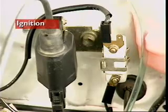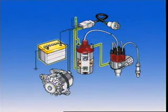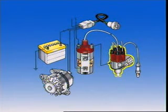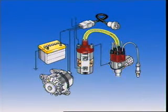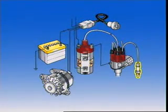This section examines ignition. A basic ignition system consists of the battery, low tension cables, the ignition coil, distributor, coil high tension cable, spark plug cables, and spark plugs.